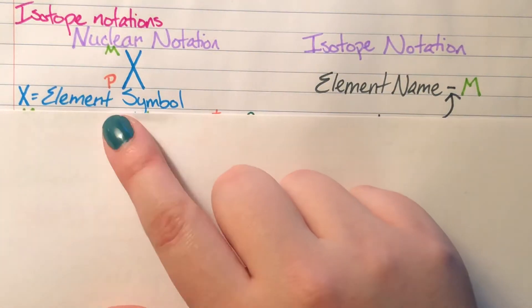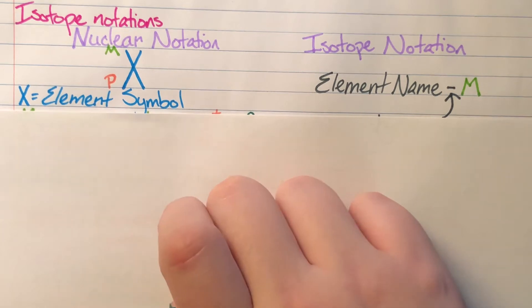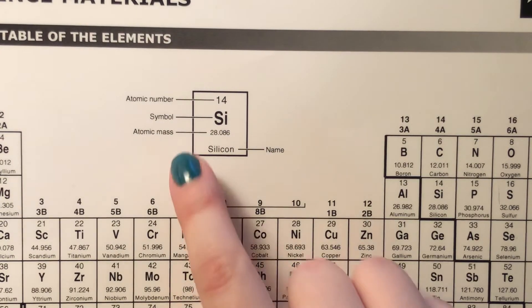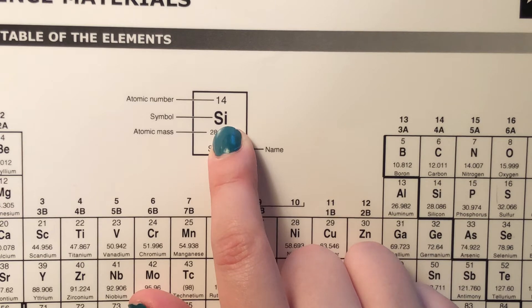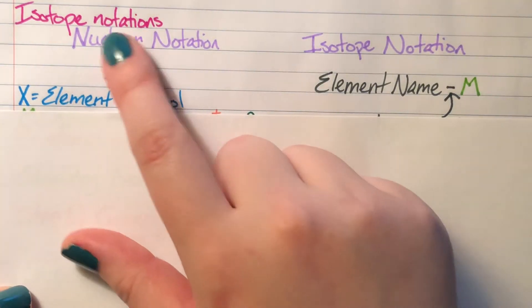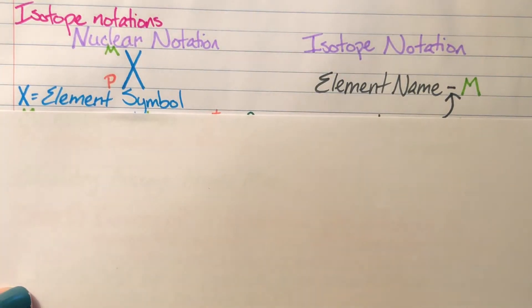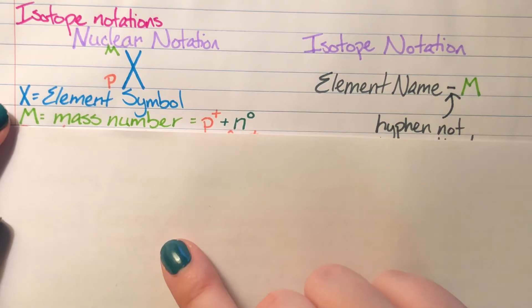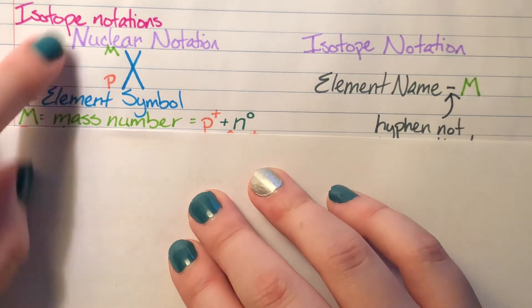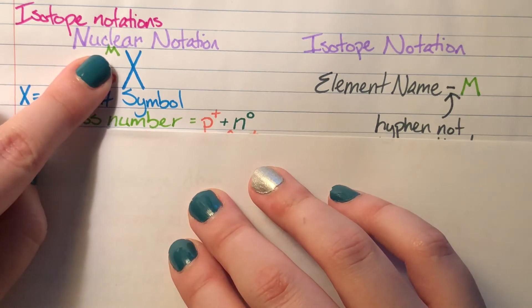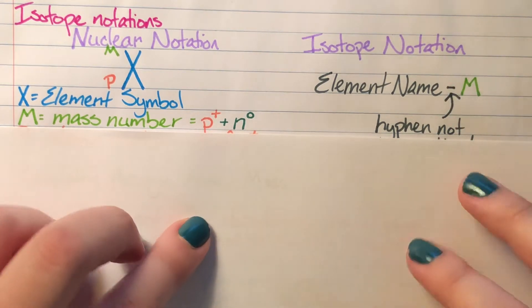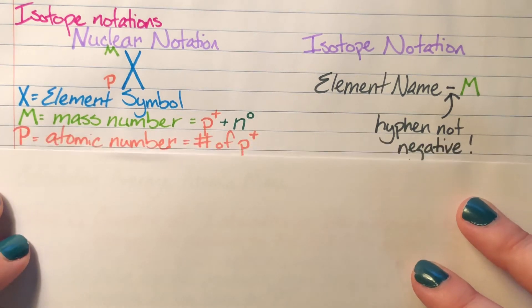X is actually our element symbol coming from the periodic table—the one to two letter shorthand for our element. For nuclear notation, we have our element symbol as the main piece, followed by our mass number for that particular form of the element. In nuclear notation it's floating in the upper left hand corner, but for isotope notation it's just denoted next to it.